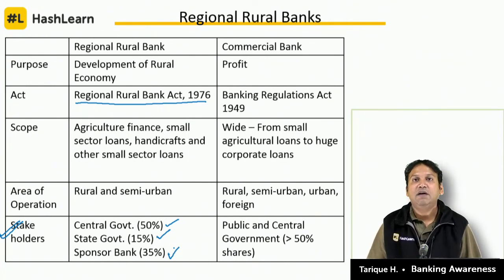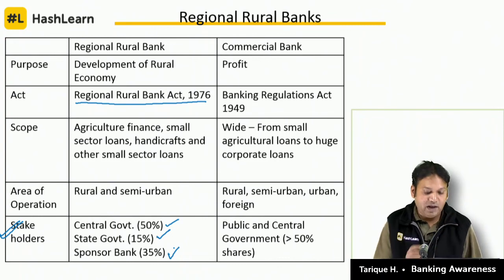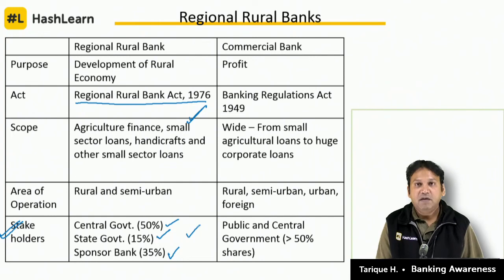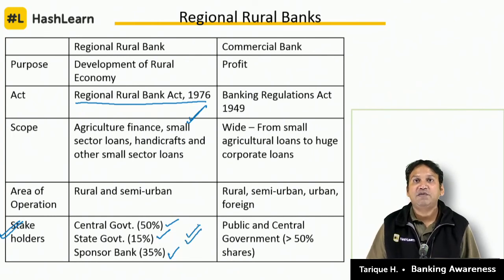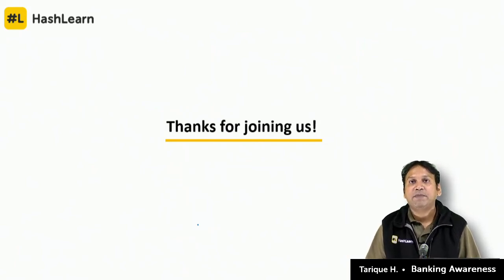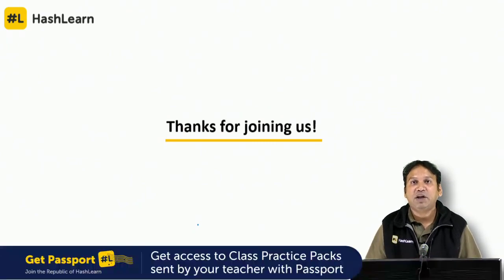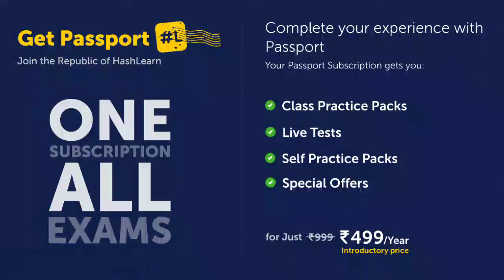There is no fixed shareholding formula for commercial banks — the only thing we know is that if a commercial bank is a public sector bank, more than 50% of its shares are owned by the central government. Two major things to remember about RRBs: the act (RRB Act of 1976) and the fixed shareholding formula. We have discussed all types of banks operational in India today. Best of luck for your examination and thank you for watching.